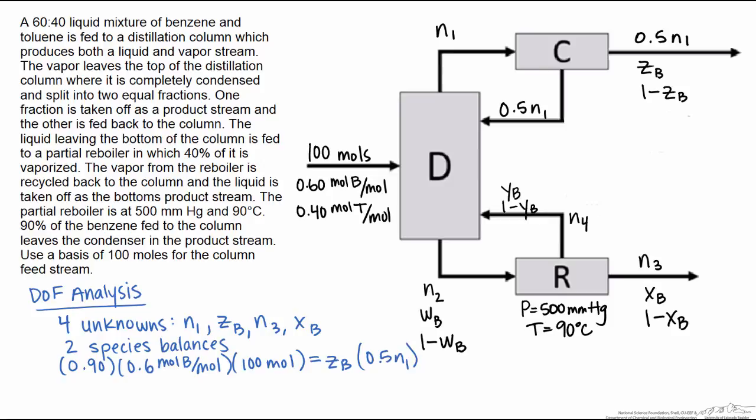However, we have no other piece of information that relates those four unknowns, so we have four unknowns, two species balances, one piece of extra information. So that means we have one degree of freedom, and we can't use the overall balance to start solving.